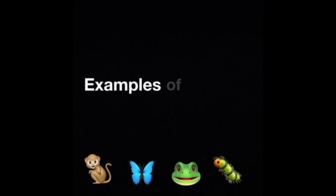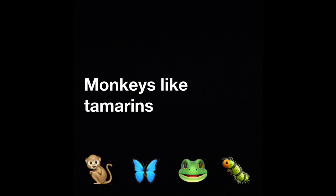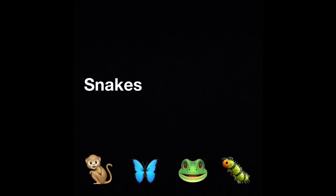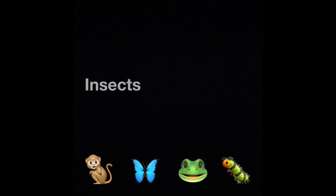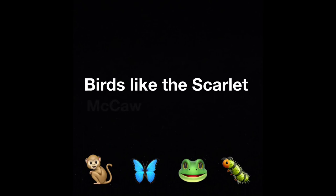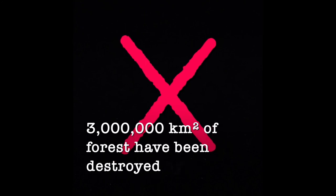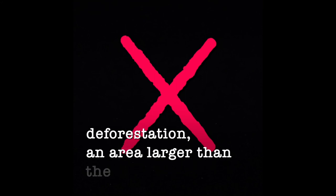Fauna: examples of small animals in tropical forests include monkeys like tamarins, sloths, snakes like the boa constrictor, rodents like mice and rats, insects like the Amazonian giant centipede, frogs like the poison dart frog, and birds like the scarlet macaw. Mid to large animals include the tapir, gorilla and jaguar. Between 1990 and 2016, almost 1.3 million square kilometres of forest have been destroyed by deforestation — an area larger than the country of South Africa.